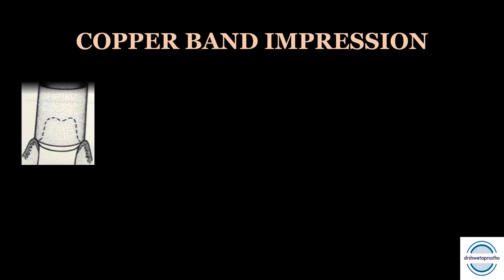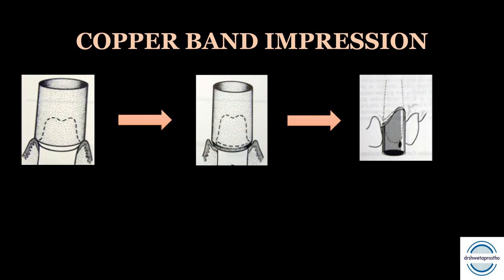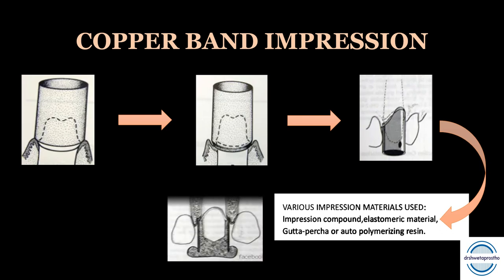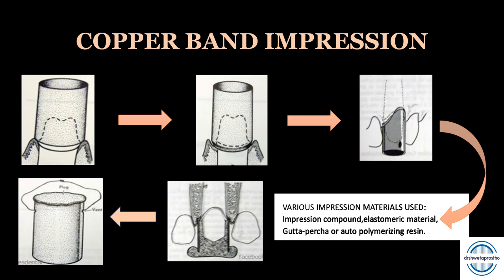The copper band impression method is another physical means of displacing the gingiva. A copper band is selected according to tooth size, the cervical end trimmed in accordance with the finish line. The band is filled with impression material — impression waxes, compound, elastomeric materials, gutta-percha, or autopolymerizing resin; most commonly impression compound is used. The band is seated on the tooth, the impression is chilled and removed with a towel clamp.